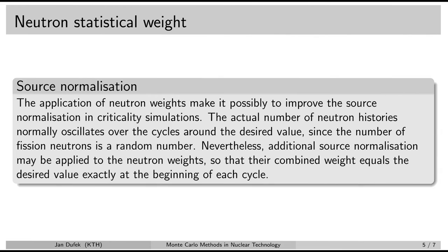It is also possible to apply non-analog methods to Monte Carlo criticality simulations. When we learned about criticality simulations, there was the problem with source normalization — we had to make sure that the neutron population was constant over successive cycles, so that even if the system was not critical, we would maintain the neutron population constant. The problem is, however, that in order to make this normalization, you have to divide all the fission cross-sections by the multiplication factor, which is not known.